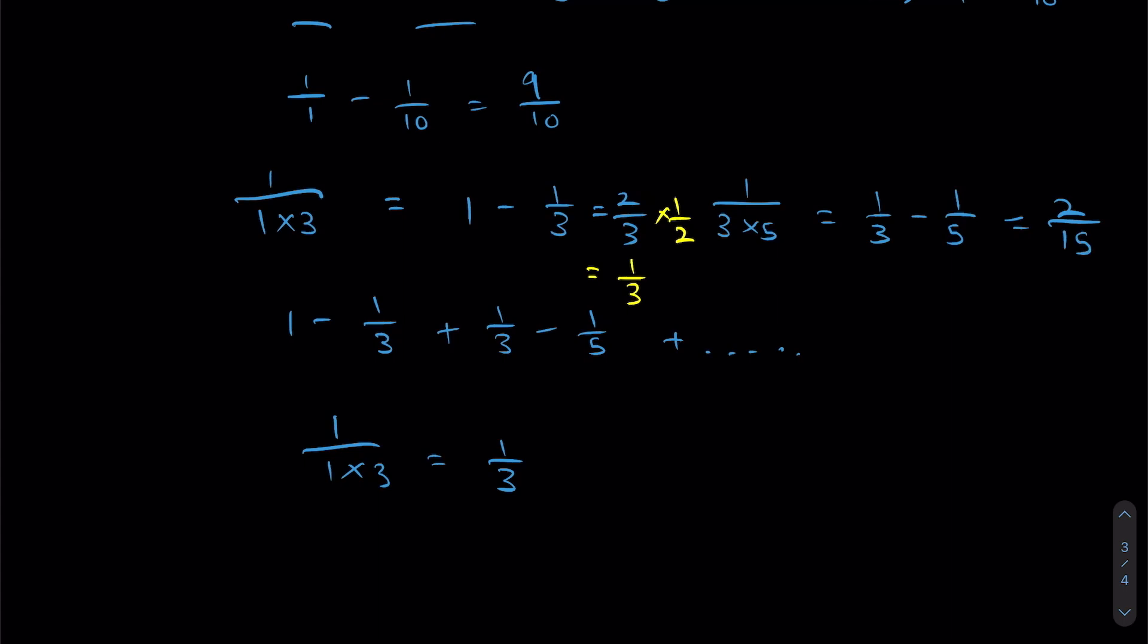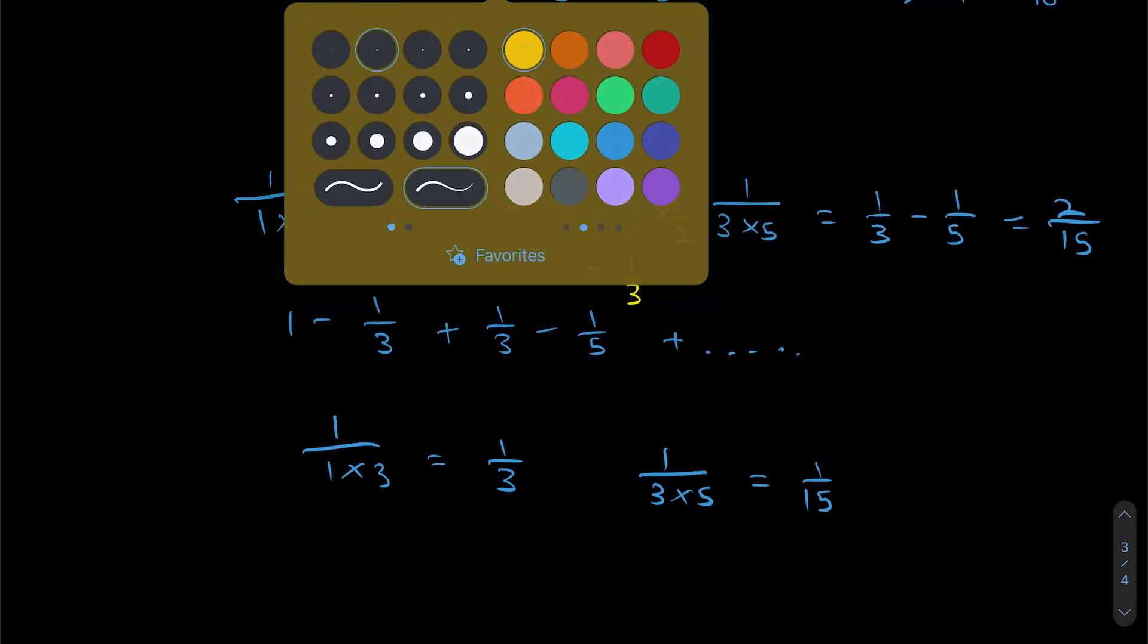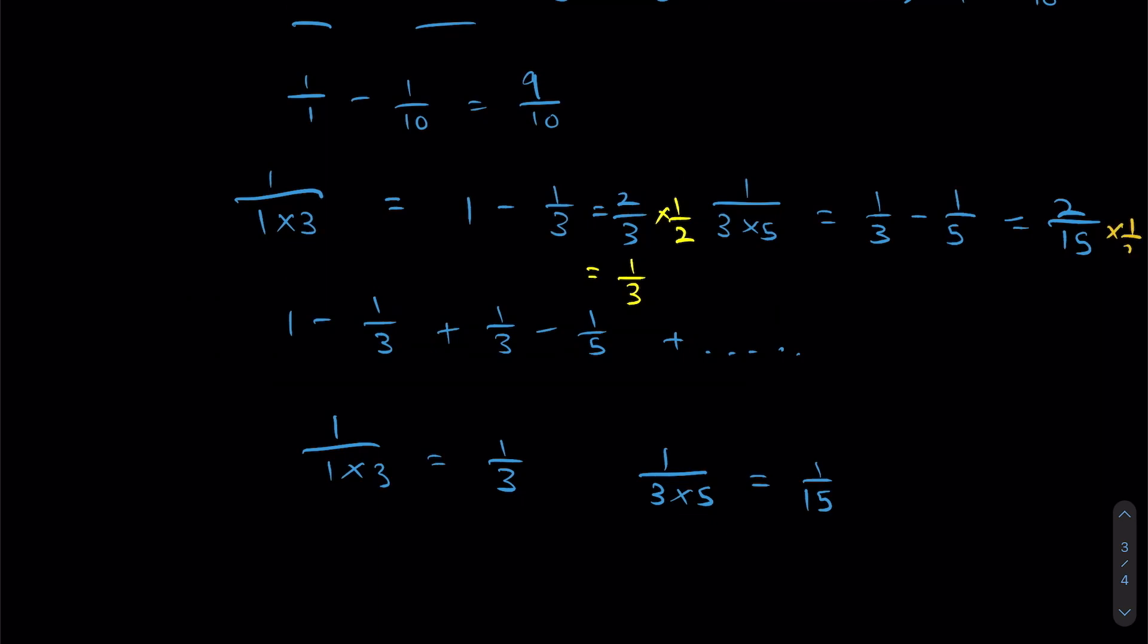However, in actuality, 1 over 3 times 5 is equal to 1 over 15. So once again, how can we fix this correction? We can multiply half to bring it down to 1 over 15.